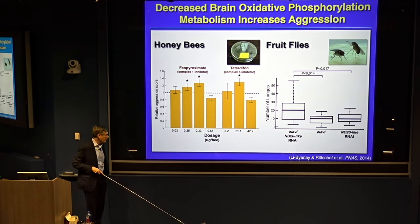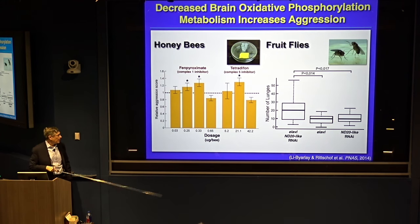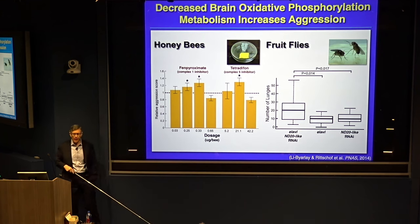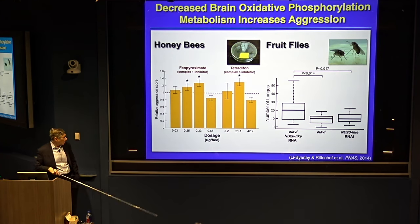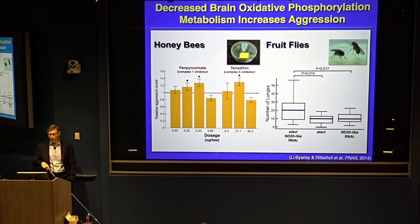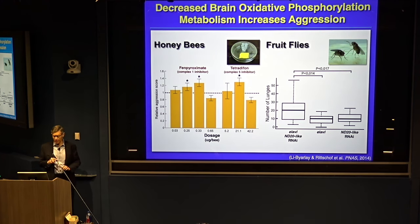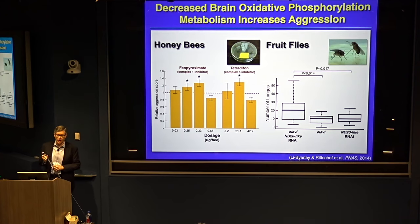In Drosophila, work by former postdoc Hong-Mei Lai Barilar, now in her own lab at Ohio University, used genetic approaches to manipulate the expression of a particular mitochondrial gene using the Elav promoter, which expresses the construct only in neurons, and showed increased aggression. Fruit flies use aggression for very different reasons than honeybees, so seeing the same neurometabolic changes driving increased aggression in entirely different social contexts gives us a sense that this change in oxphos has more generality. We've also now seen it in collaborative work with mice.